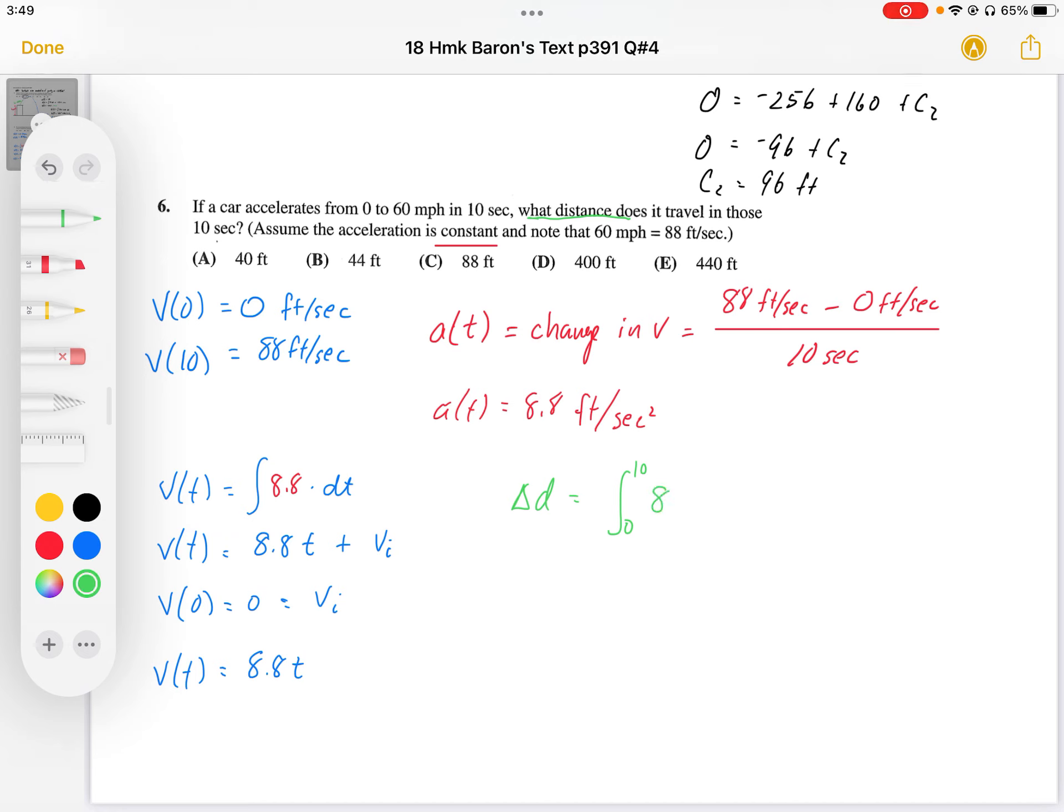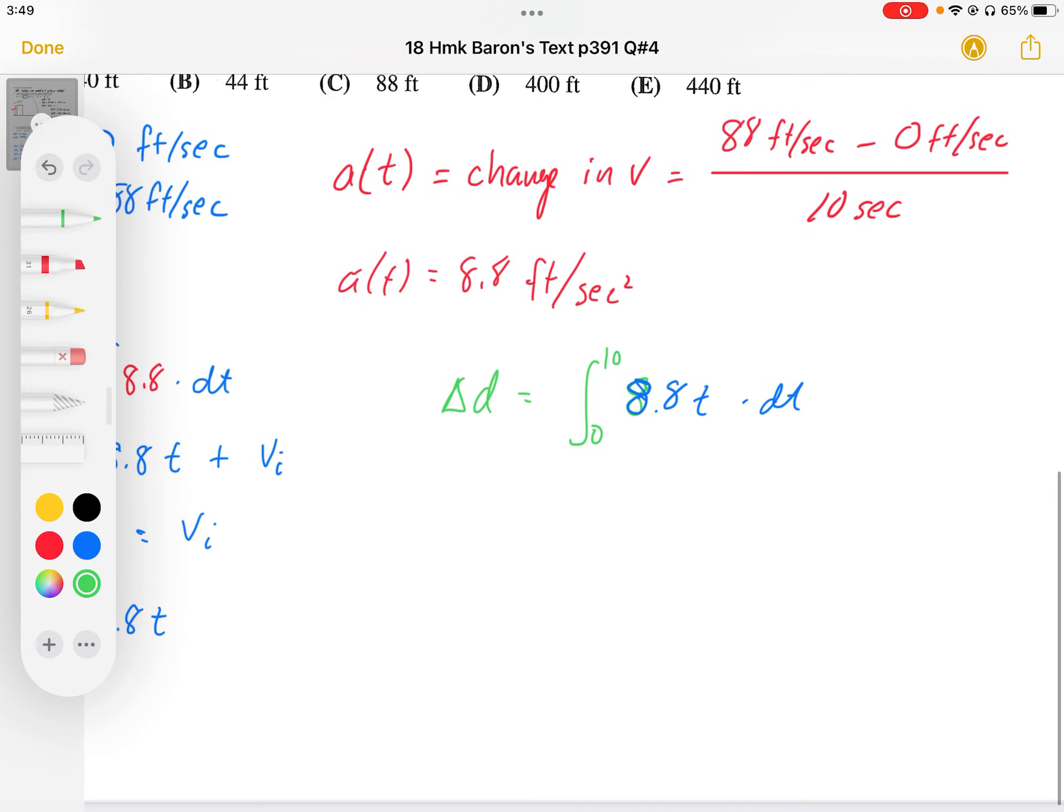8.8 t dt. Okay, so when I work this out, I'm going to end up with 8.8. So it's going to be 4.4 t squared, and that's going to be from 0 to 10.